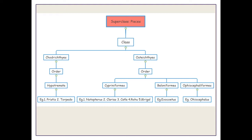From the Chondrichthyes, we have to study two examples from one order, that is the Hypotremata. The two examples are Pristis and Torpedo.